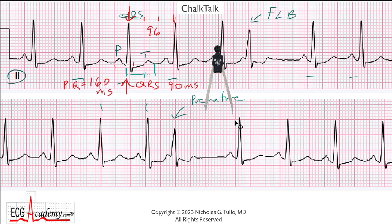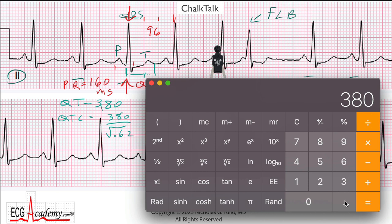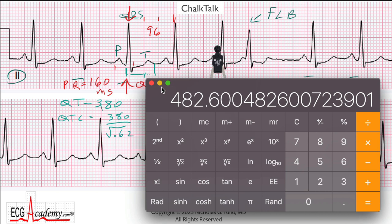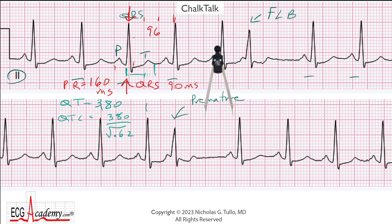So if we say the QT interval is 380 milliseconds, then the QTc would be 380 divided by the square root of the R-to-R, which we already said was 620 — so that's 0.62. We'll calculate 380 divided by the square root of 0.62, and that gives us 482 milliseconds, which is a little bit long. It actually does look a little bit long because the T wave should not really go past the midpoint between the two R-to-R intervals. You can see the T wave actually extends past that midpoint, so indeed a QTc of 482 milliseconds appears to be accurate.